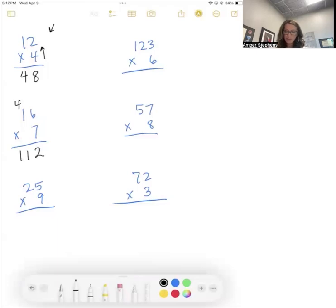25 times nine. I'm going to do this one more mentally. Nine times two is 18. And I have a four that I brought, I carried from my 45. So 18 and four is going to be 22. And then nine times five is 45. So I put my five there, 225.